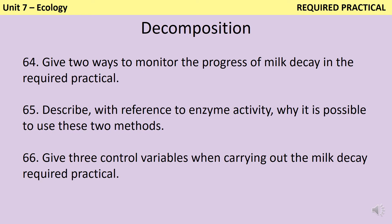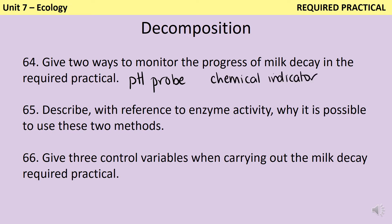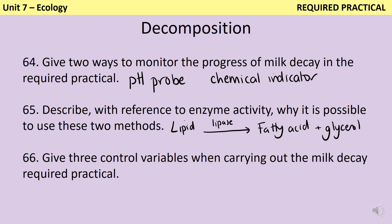Whichever enzyme you pick, it produces an acidic product, so it's possible to monitor the progress of the reaction by using either a pH probe or a chemical indicator which changes colour in response to pH. If you're using lipase, which is the more common way of doing this practical, then lipase breaks down lipids to make fatty acids and glycerol. Fatty acids are obviously an acid, which makes it possible to use either the pH probe or the chemical indicator.